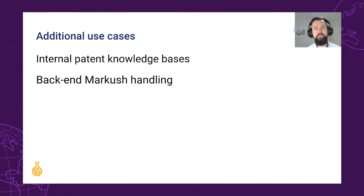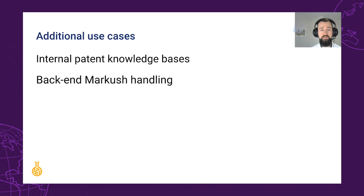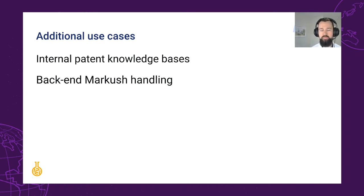The creation of internal patent knowledge bases is one area where our data extraction tools are very helpful. Subscription patent search databases tend to limit you to matching a particular structure to a patent, but do not then provide you with the entire Markush structure or some otherwise complete representation of the chemical space for the patent. This is where users would step in, extracting the information from a small set of relevant patents themselves in order to form a clearer picture of their freedom to operate. These Markush handling tools build upon ChemAxon backend software, which some people are interested in bringing into their own applications.